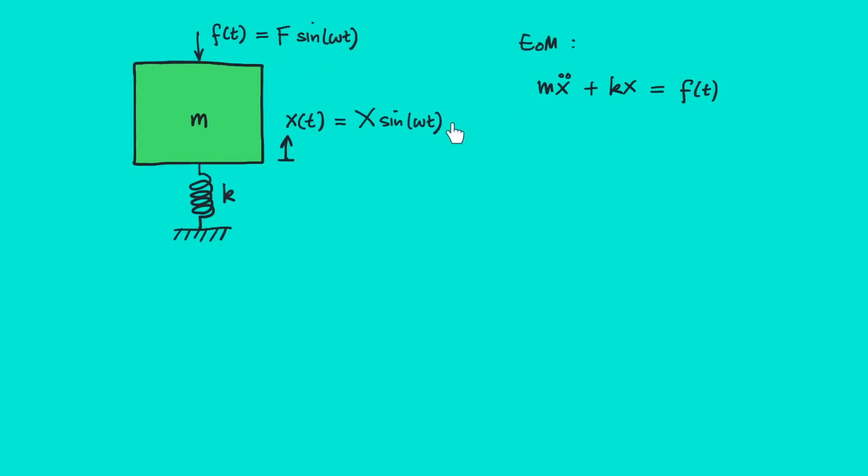Then we can substitute f(t) and x(t) into the equation of motion. Remember that x double dot is the second derivative of x.